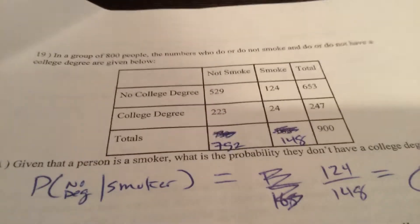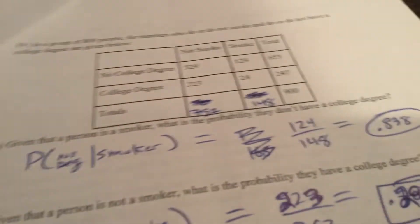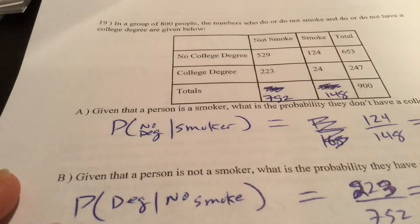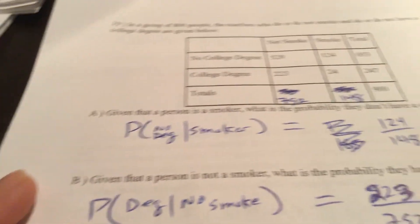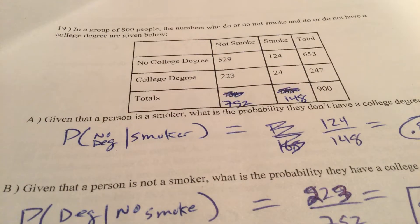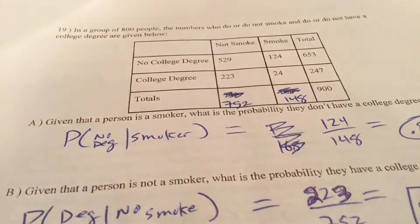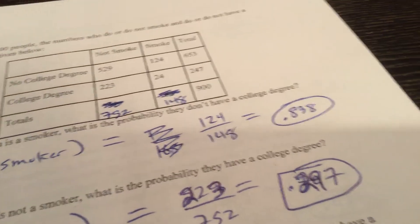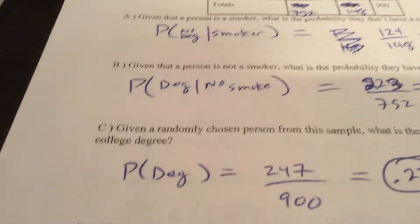Please, on number 19, make that correction. Given that a person is a smoker, what's the probability that you don't have a college degree? So probability no degree given they're a smoker. Write a probability statement there. So they have to be a smoker. There's 148 of them. What's the probability? They don't have a college degree. 124 is the numerator. That is your probability.